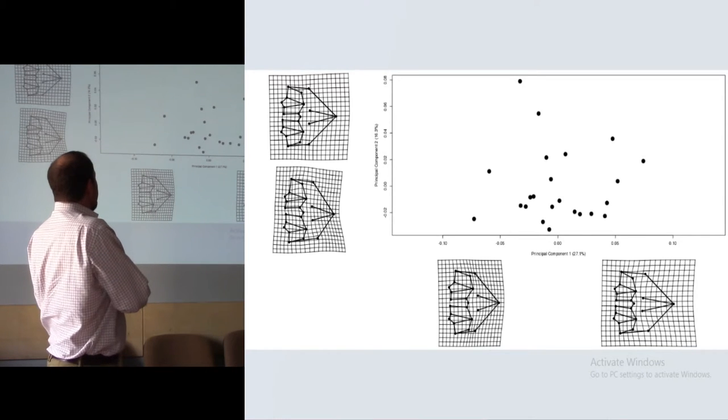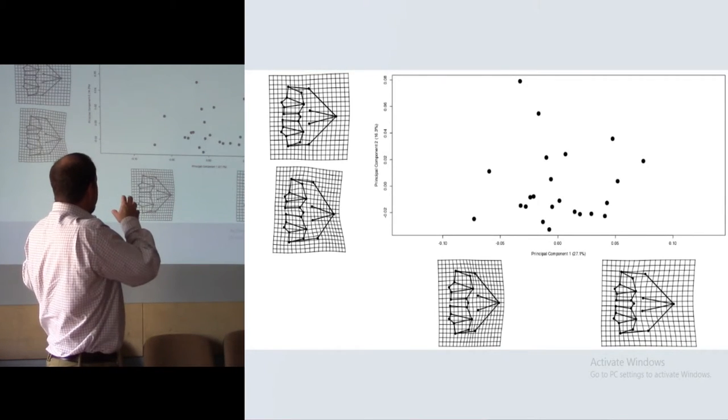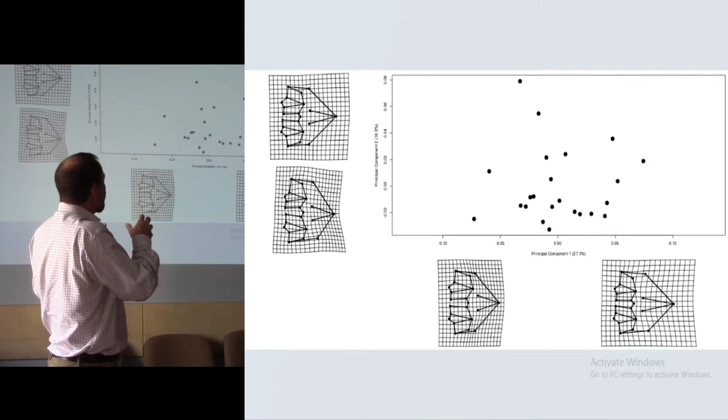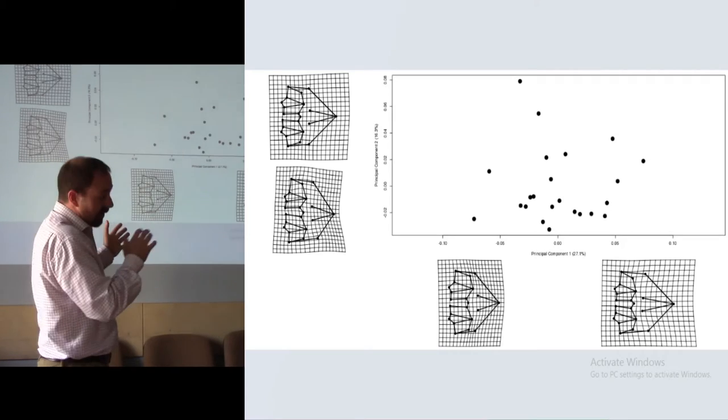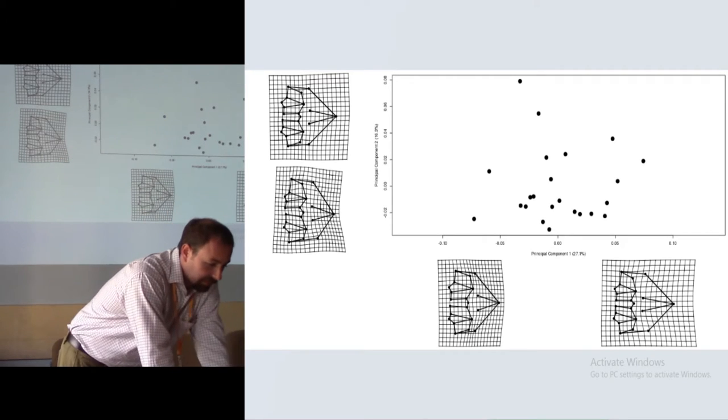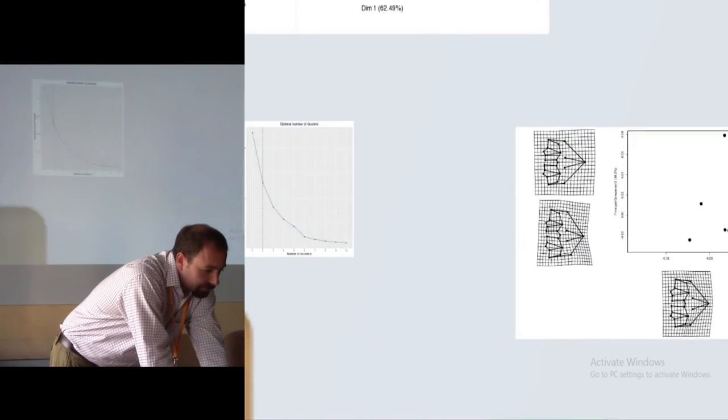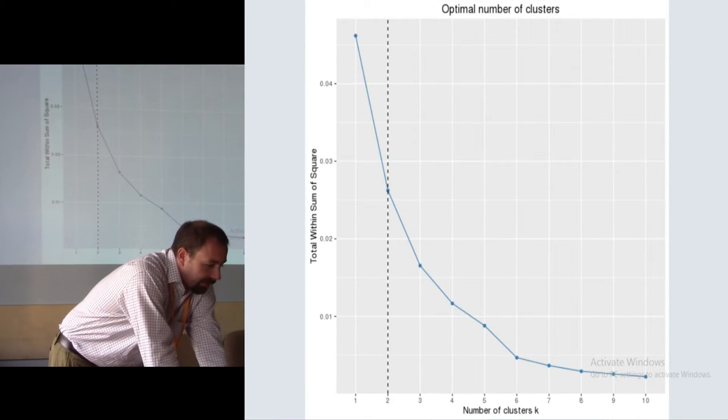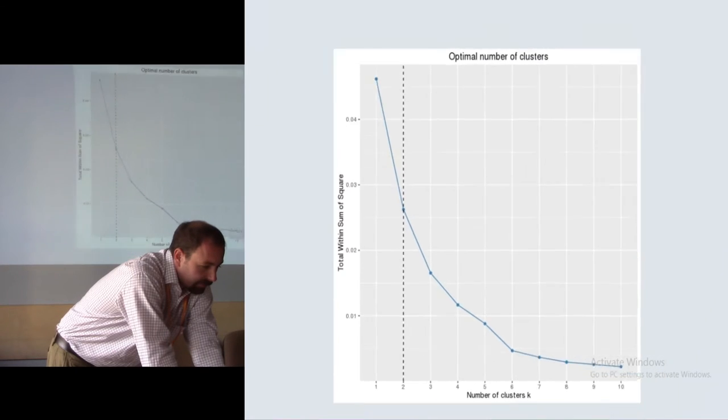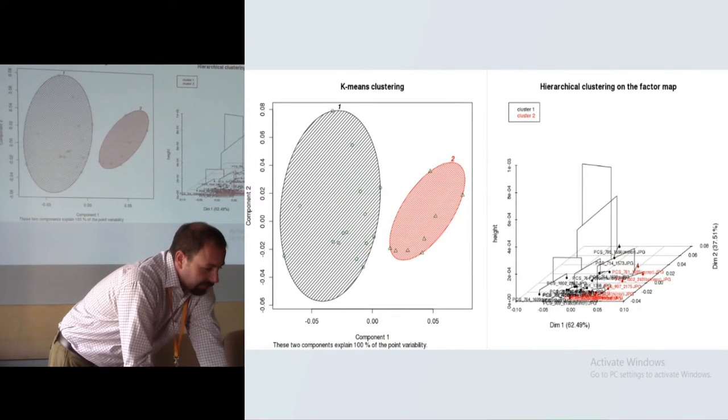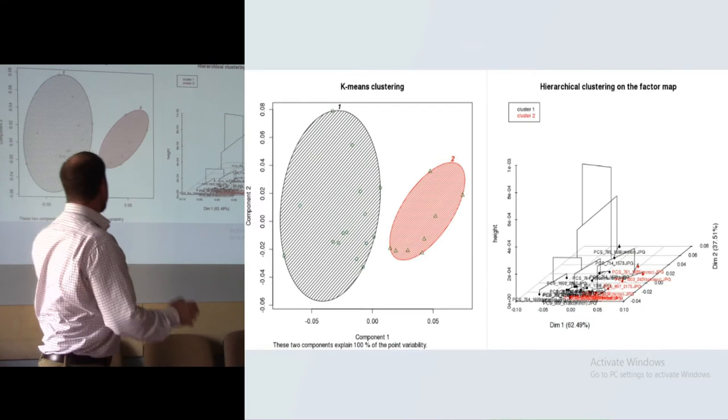The result of the principal component analysis, we can see that it's very similar, very small differences, but maybe individual groups. After the K-means partitioning, it recommends to us two groups on the basis of the structure loadings. We can see these two groups.